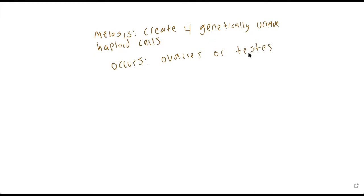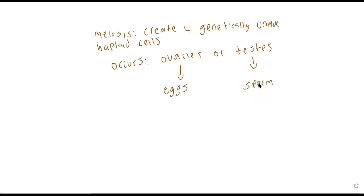The ovaries and the testes create either eggs or sperm. These structures are called gametes, so eggs and sperm are called gametes.